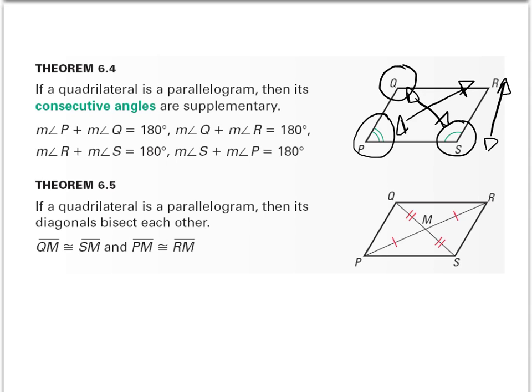Theorem 6.5 states that if a quadrilateral is a parallelogram, then its diagonals bisect each other. Meaning that this would be congruent to this, and MP is congruent to MR.